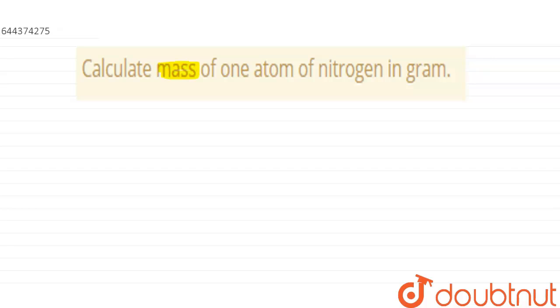the mass of one atom of nitrogen in grams. So we have to calculate the mass of one atom in grams of nitrogen. We know that molar mass of nitrogen is 14 grams per mole.